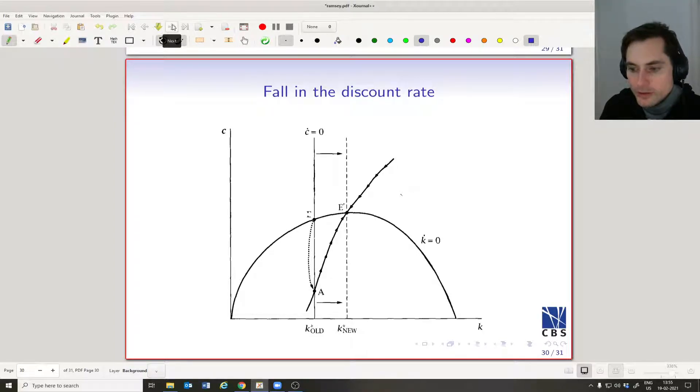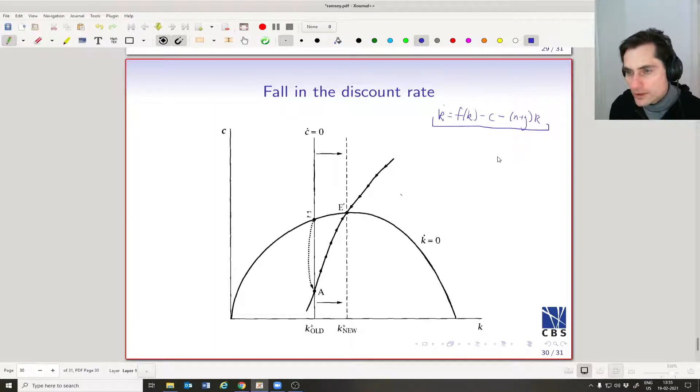Let's think about what happens if we were to have a fall in the discount rate. Recall we have two equations here: one equation that gives us c-dot equals zero, and one equation that gives us k-dot equals zero. K-dot is simply equal to—I'm going to omit the t's so I don't have too much notation—k-dot is going to be equal to f(k) minus c minus breakeven (n+g) times little k. Note that in this expression we don't have any ρ, so when we change ρ, we don't change anything about the k-dot level.